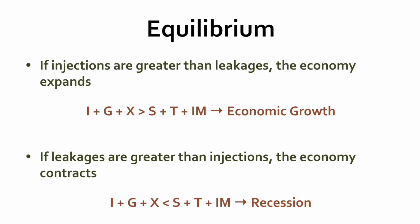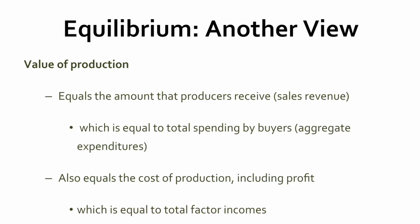Ideally, the Bank of Canada would like a situation where everything is in equilibrium, meaning that investment, government spending, and exports match savings, taxes, and imports. That's not always the case. We see here in this particular graphic that if investment, government spending, and exports are greater than savings, taxes, and imports, we're going to get economic growth, because more money is being injected into the economy than is being taken out. However, if leakages dominate — investment, government spending, and exports are less than savings, taxes, and imports — that drains money out and we run into what's called a recession.